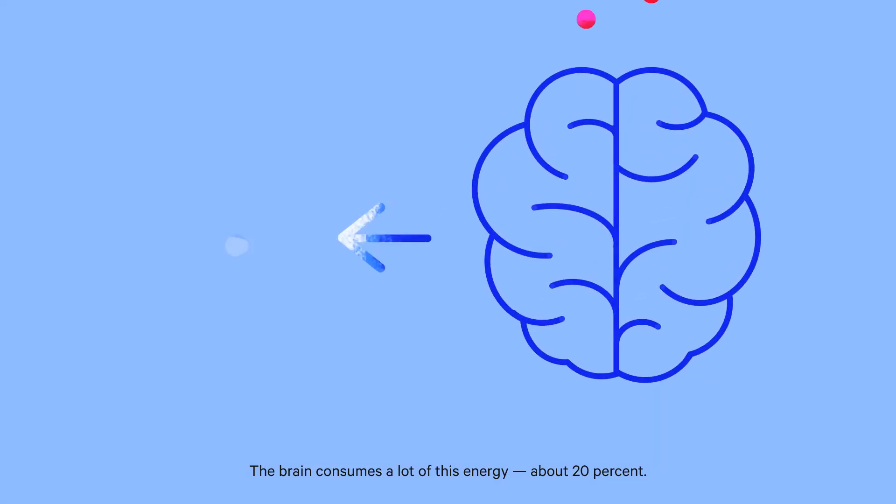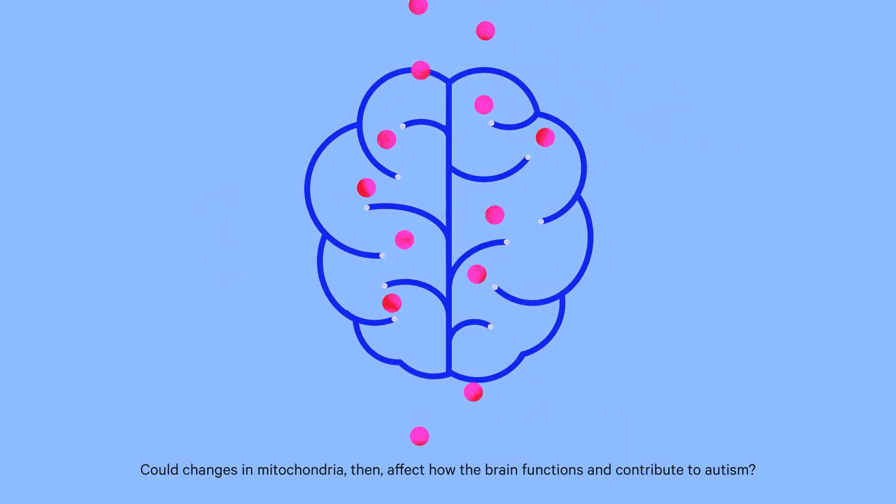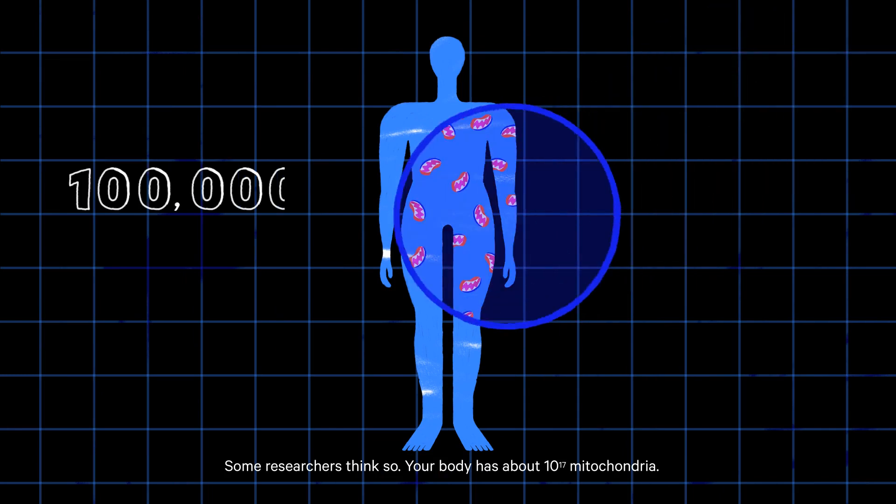The brain consumes a lot of this energy, about 20%. Could changes in mitochondria then affect how the brain functions and contribute to autism? Some researchers think so.